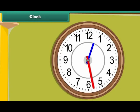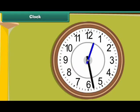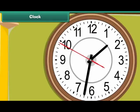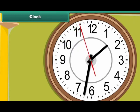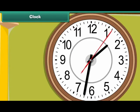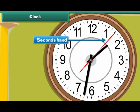The clock has two hands. The longer hand is called the minute hand — it indicates time in minutes. The shorter hand is called the hour hand, and it indicates time in hours. Some clocks have a third hand; it is the thinnest and the longest hand in the clock. It is called the seconds hand, and it indicates time in seconds.